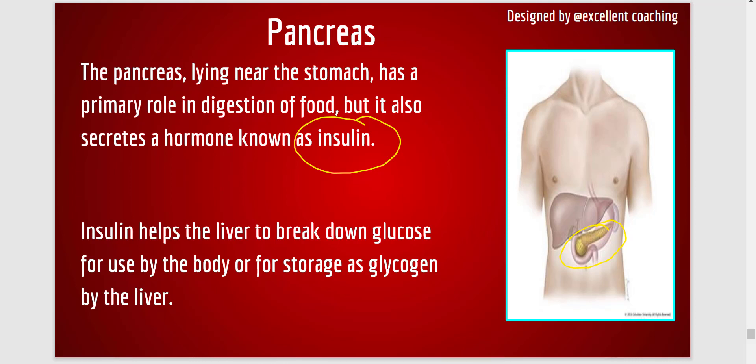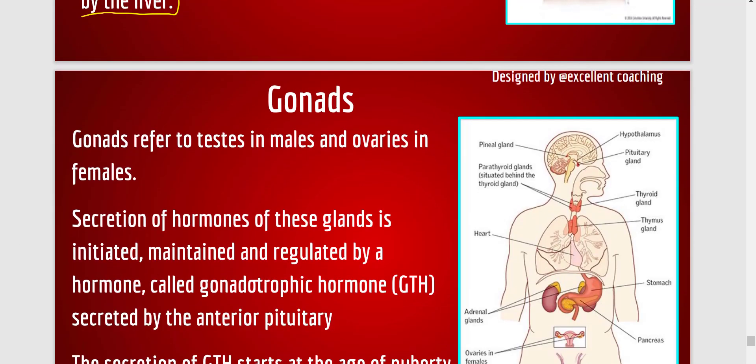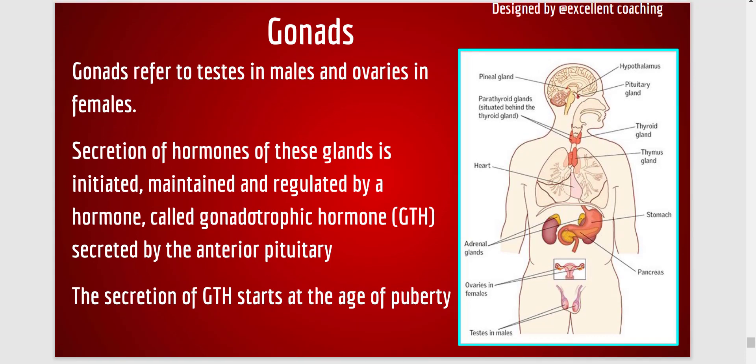Insulin is required for the proper breakdown of glucose; otherwise, the extra glucose travels in your bloodstream causing diabetes. This broken-down glucose is used by the body, and glycogen is stored by the liver. This is the function of the pancreas. Now moving on to the gonads, which are the sexual glands releasing sexual hormones in your body. Gonads refer to testes in males and ovaries in females.